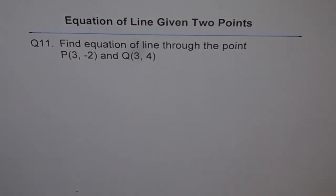Equation of line given two points. Question 11. Find equation of line through the point P(3, -2) and Q(3, 4).